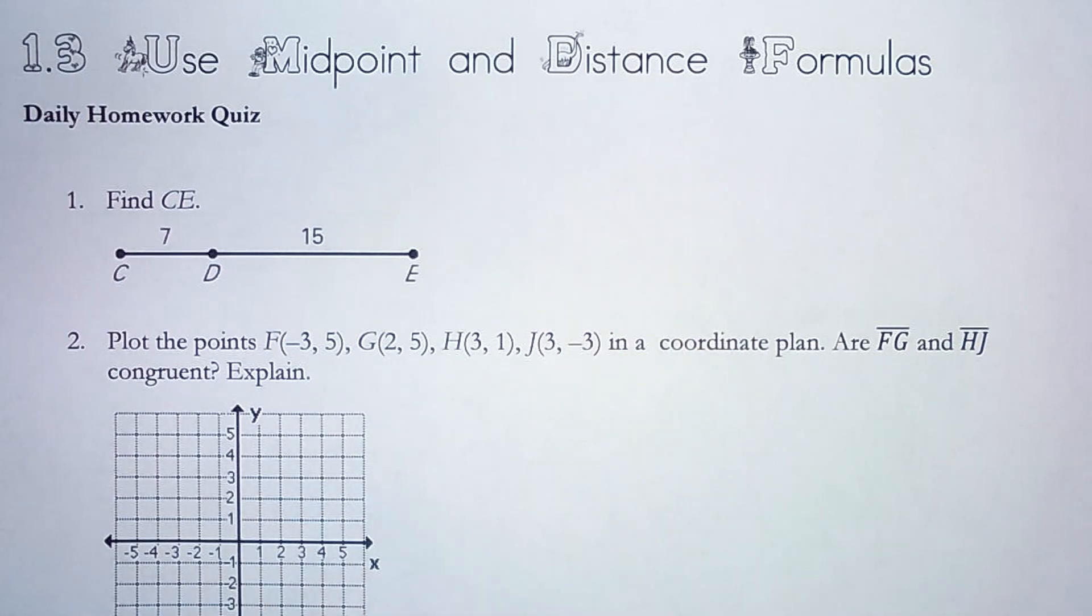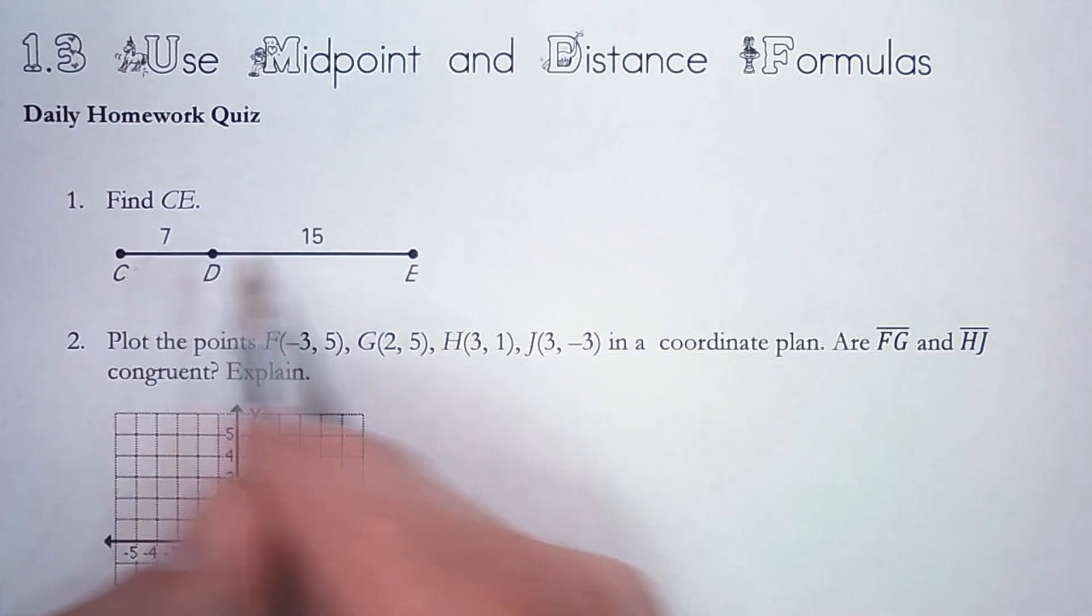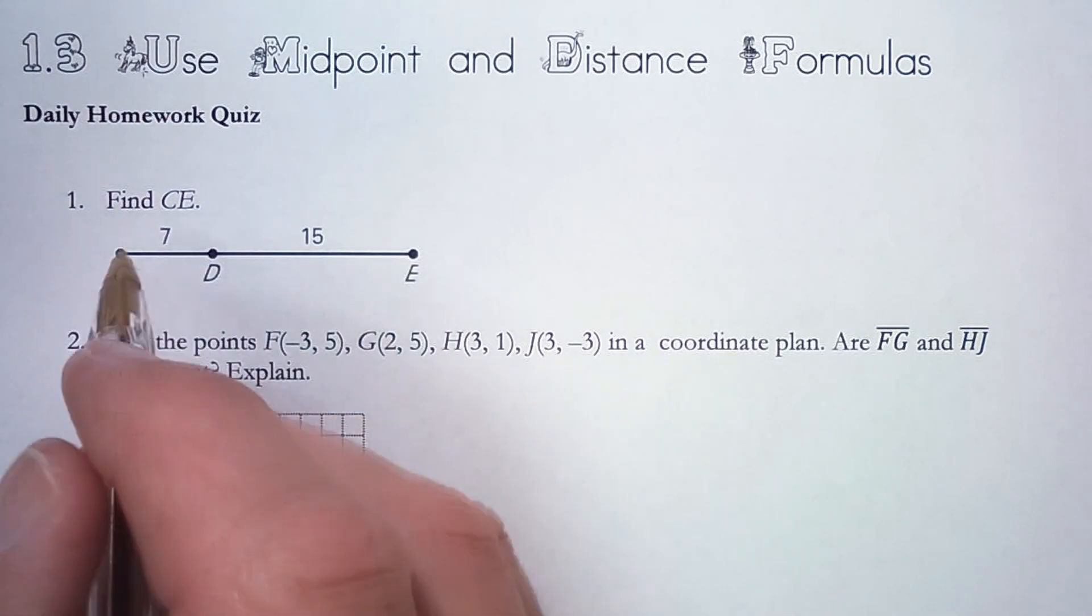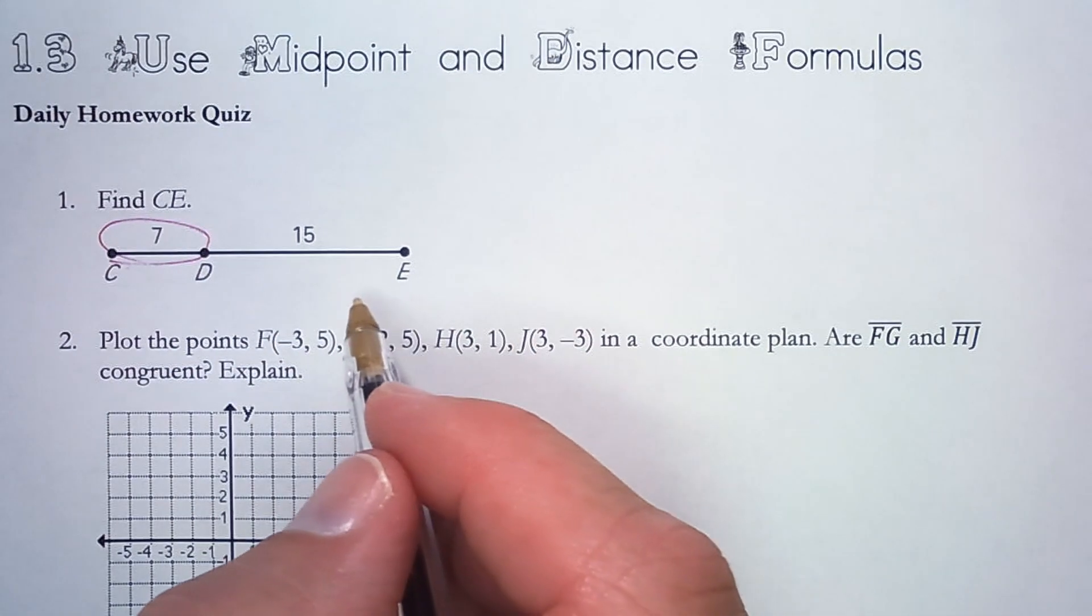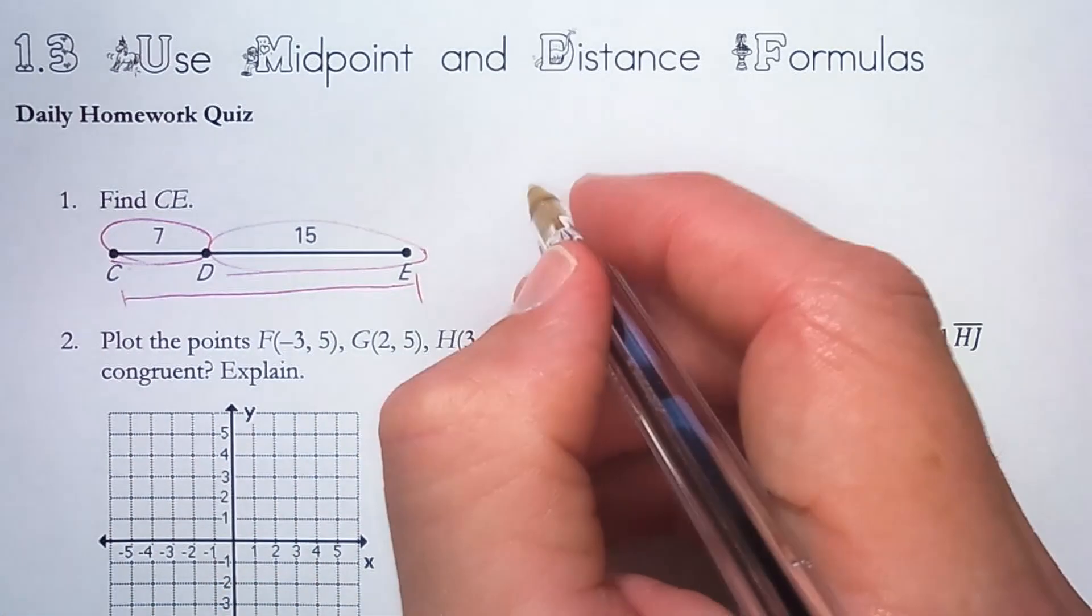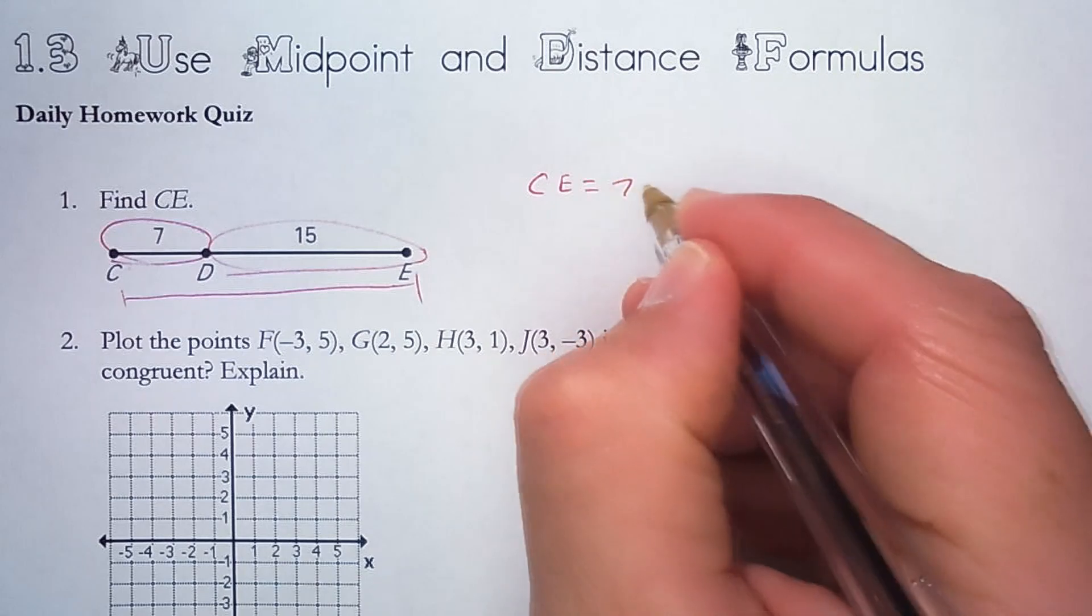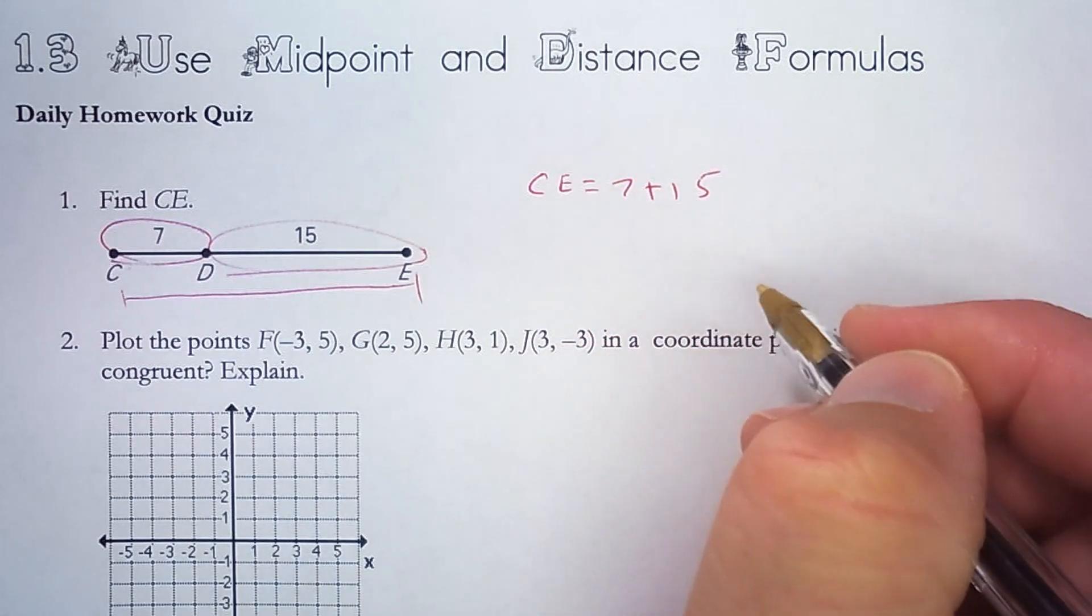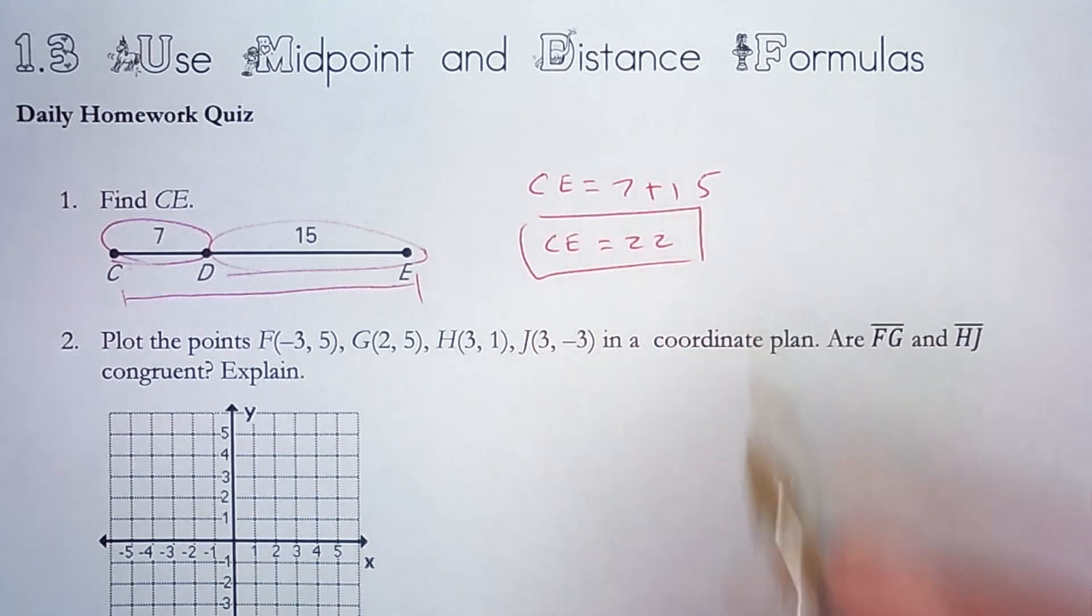First, though, we're going to review a couple concepts that we've talked about recently. Find the length of segment CD. For that, we are going to use the segment addition postulate, which says if I add segment CD's length to the length of segment DE, I will get the length of segment CE. So the length of segment CE is 7 plus 15, which equals 22.